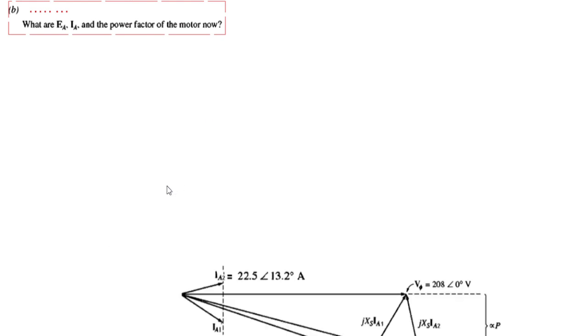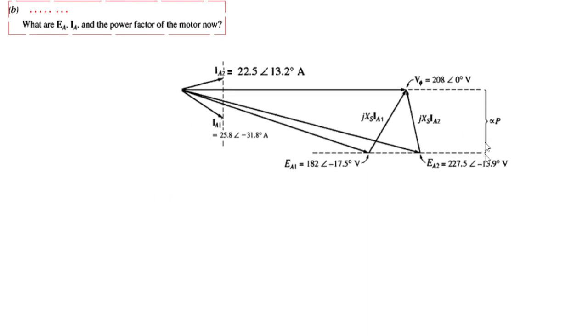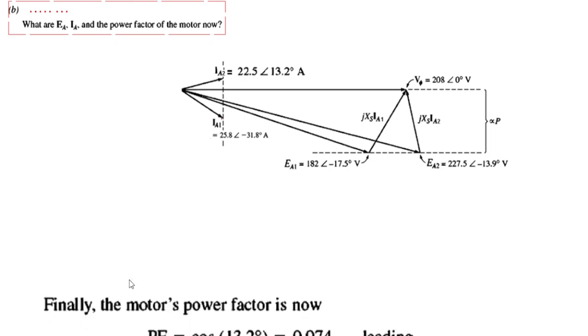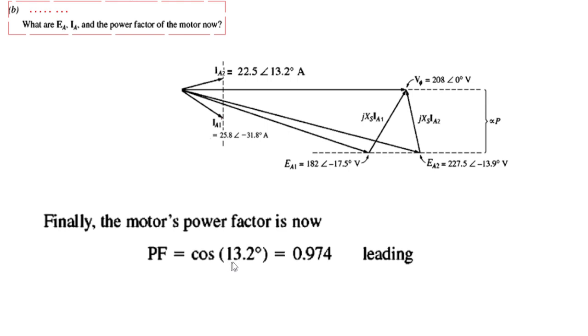The question also asks for the power factor of the motor now. The power factor is the cosine of the angle between the current and the reference voltage. Since the current angle is +13.2 degrees, the power factor equals cos(13.2°) = 0.974. Since the angle is positive, the power factor is leading.